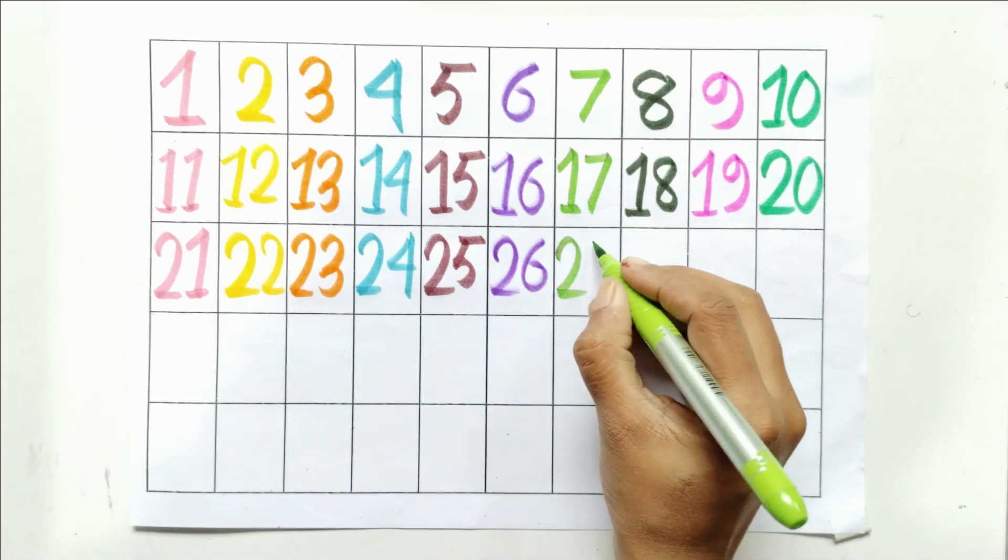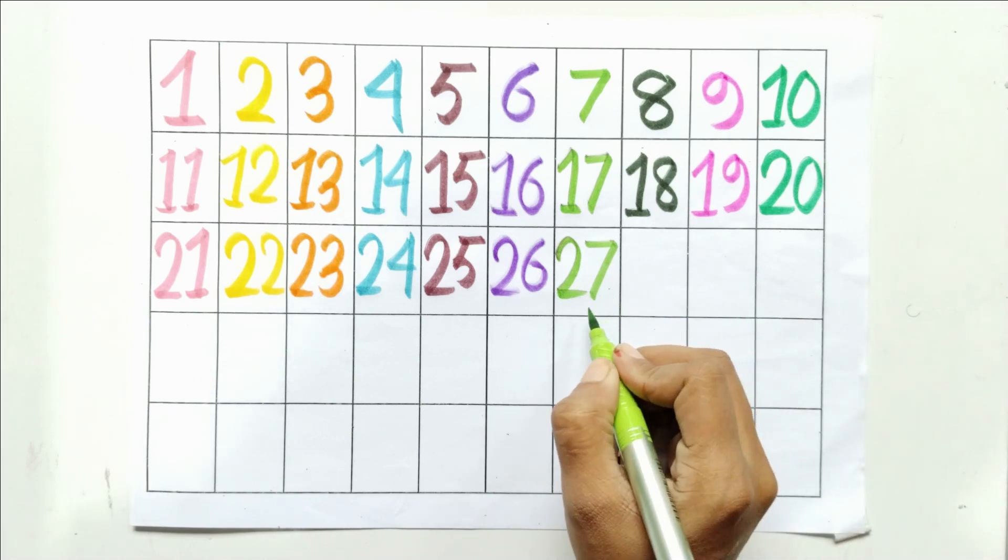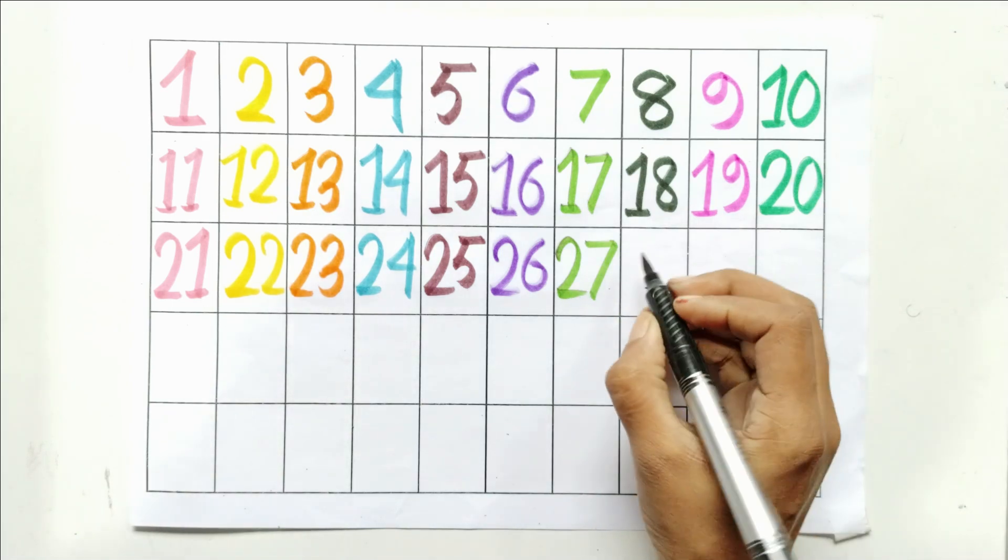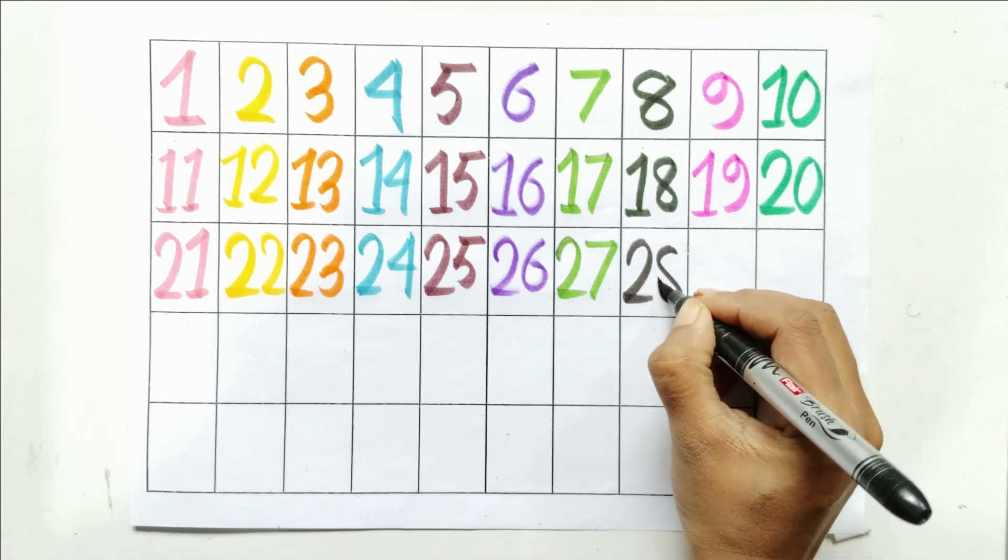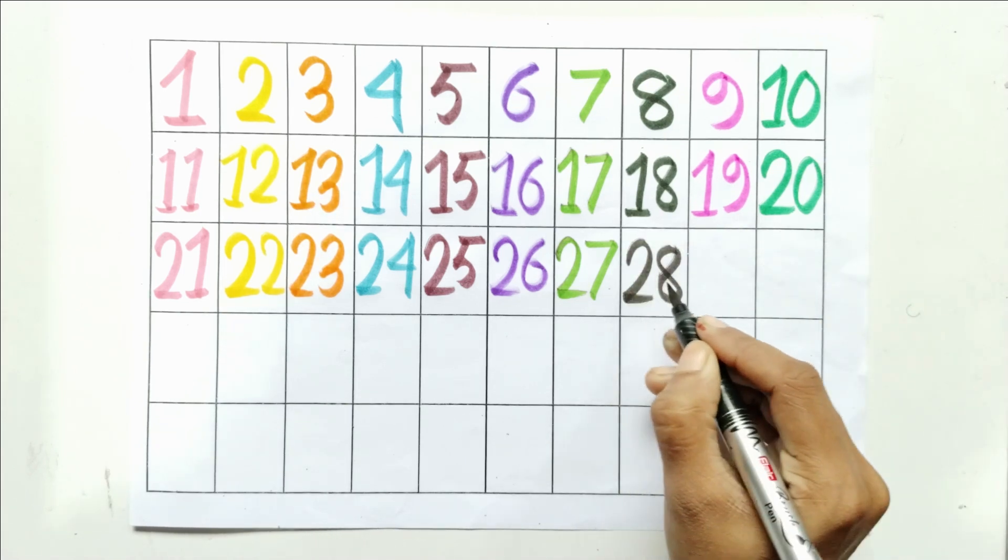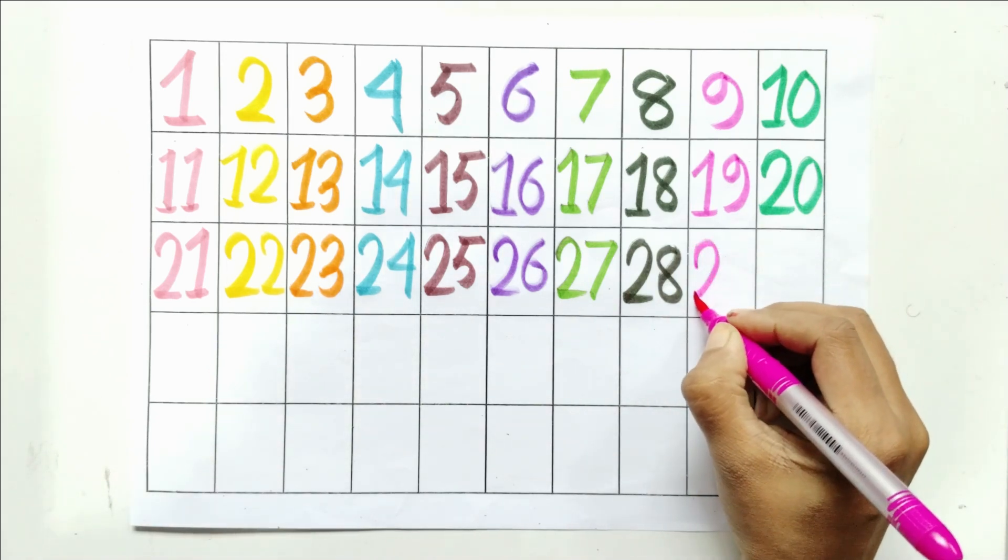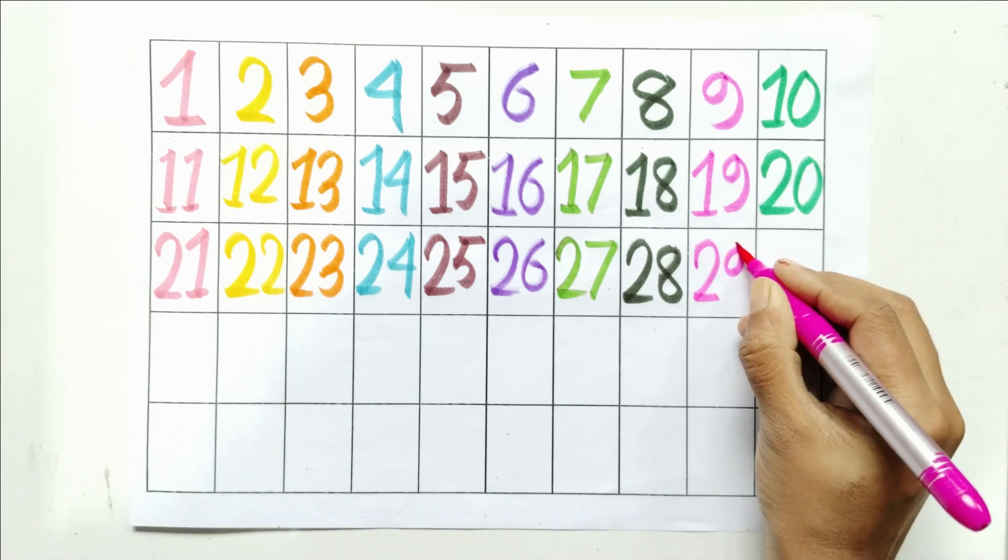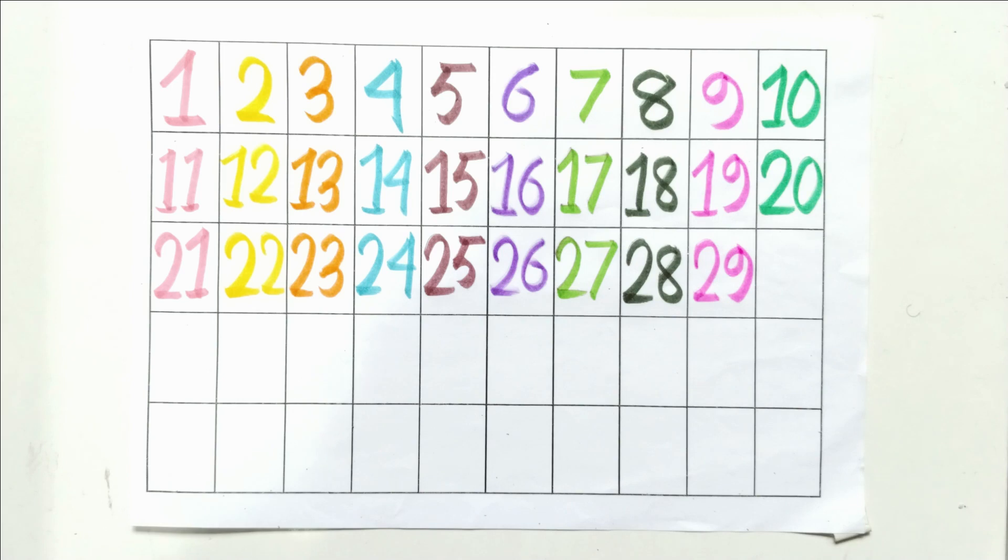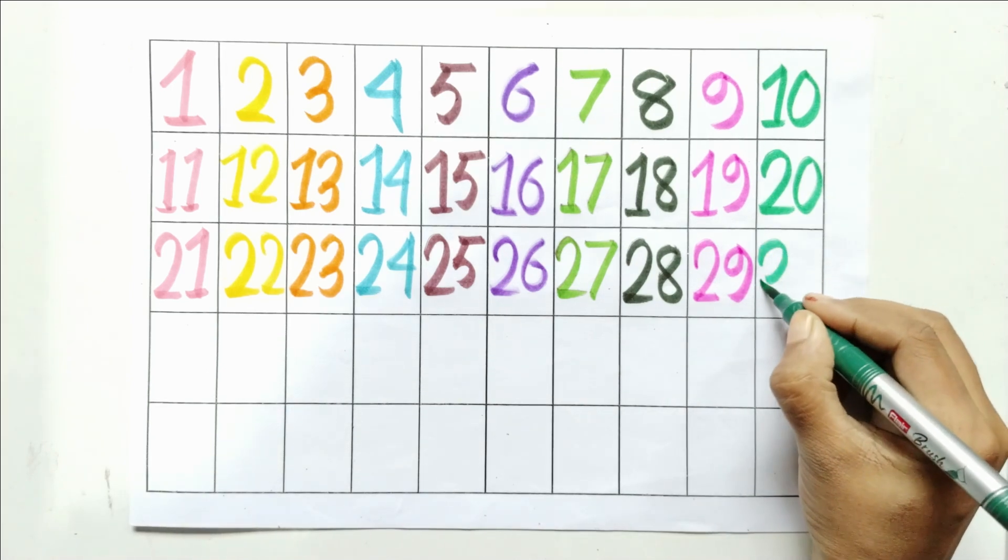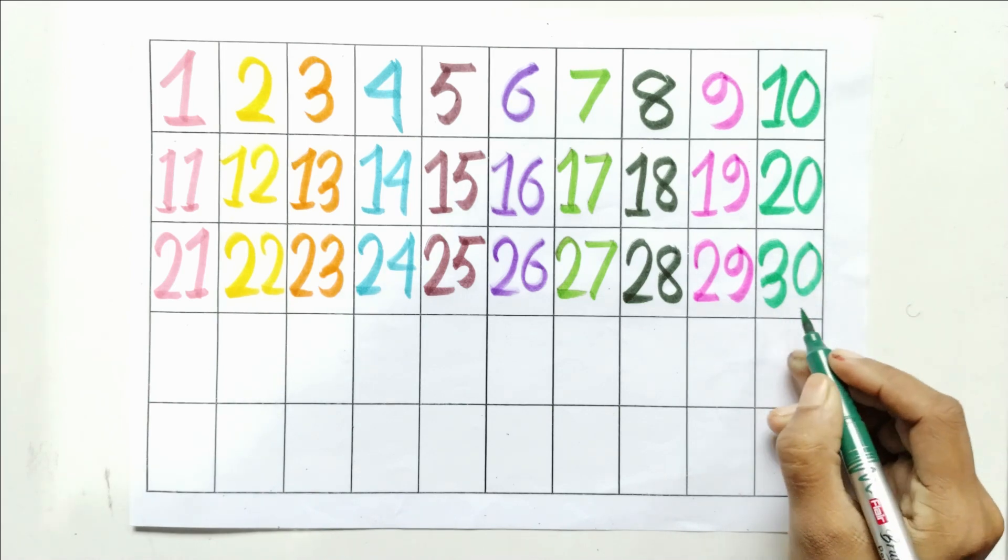Two and seven, twenty-seven. Two and eight, twenty-eight. Two and nine, twenty-nine. Three and zero, thirty.